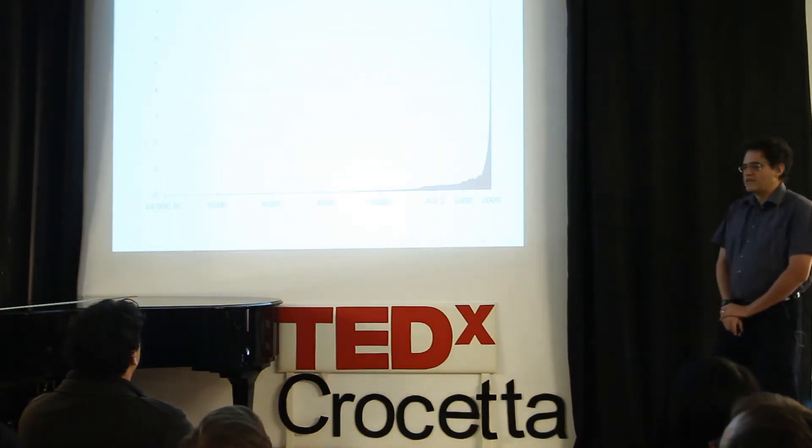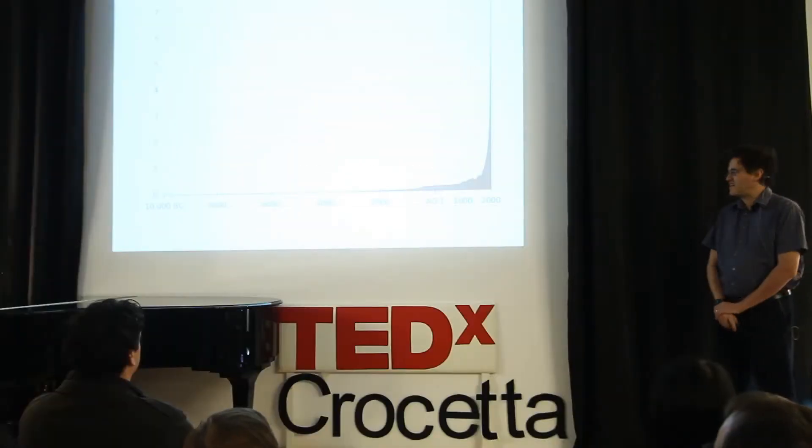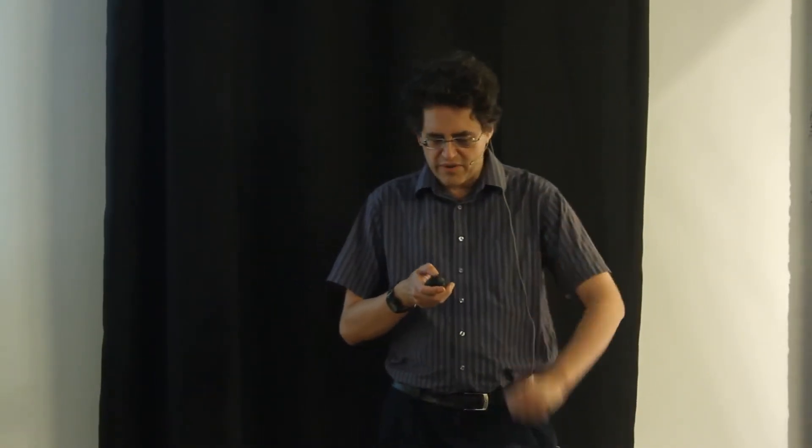For example, we live in a period in history when the population growth is almost vertical in this chart. This is population since the last ice age. So we expect that everything will be growing. Everything should be growing. Economic growth is good.